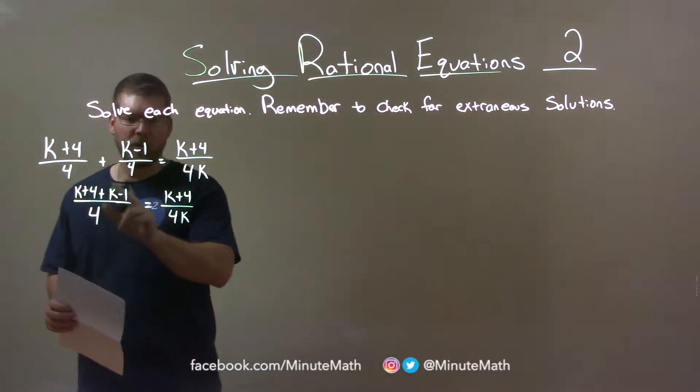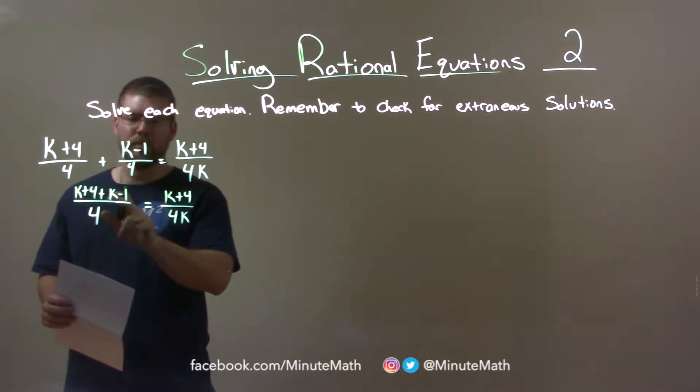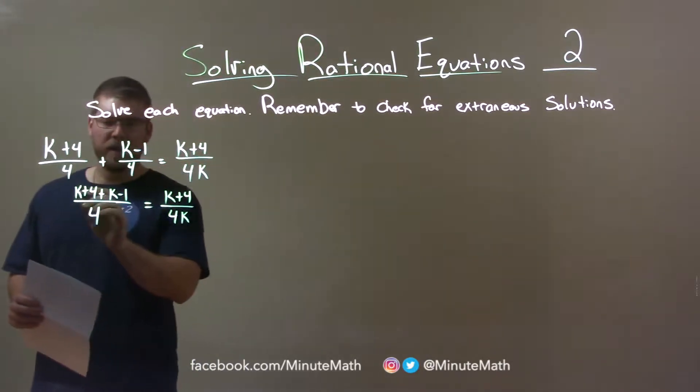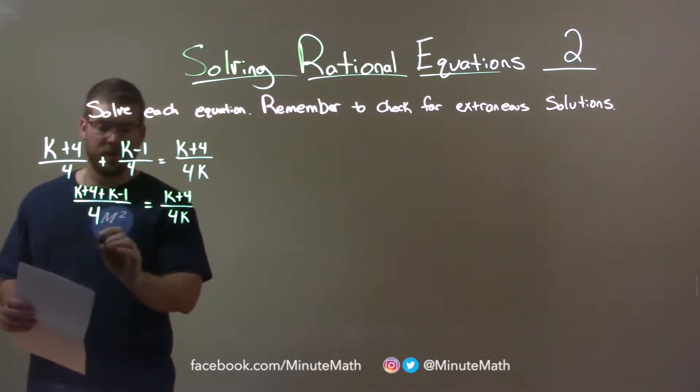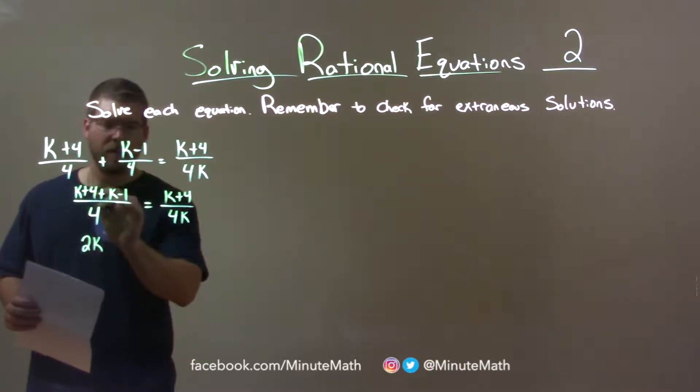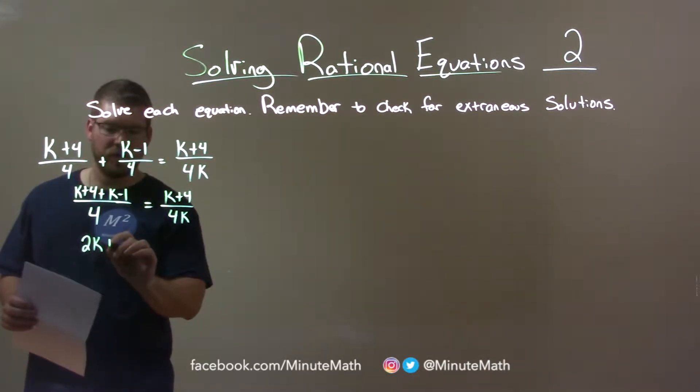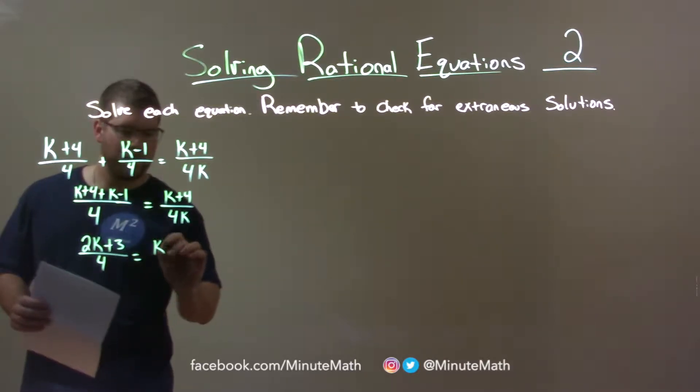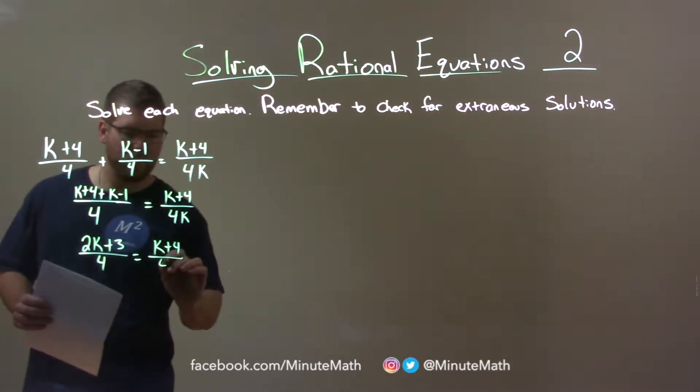Now keep going. Let's simplify what we can up here. We have k plus 4 plus k minus 1. The k's and k's become, or k plus k is 2k and then 4 minus 1 is 3. So positive 3 over 4. And now we have k plus 4 over 4k.